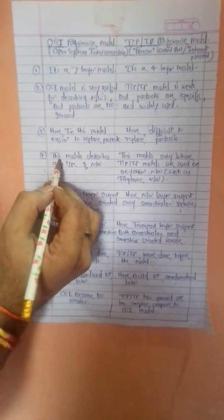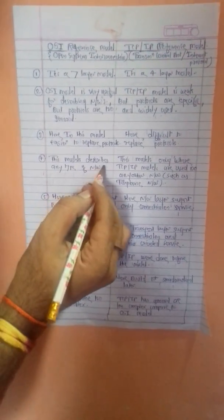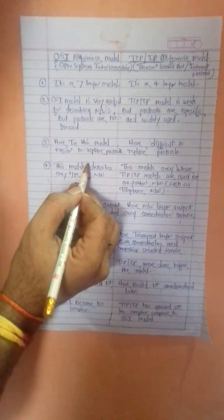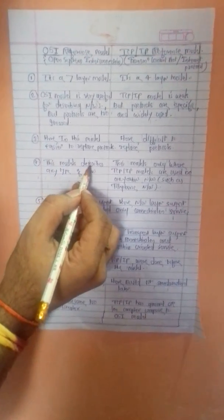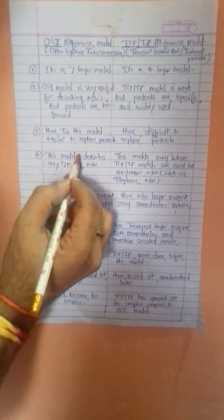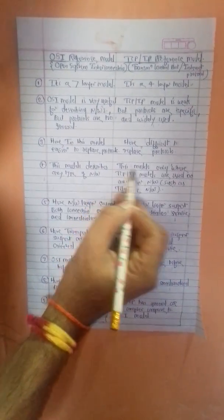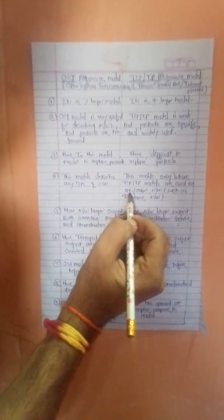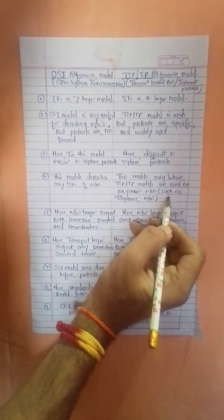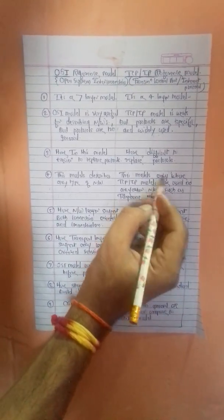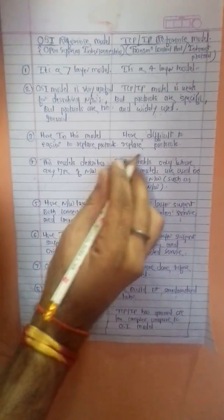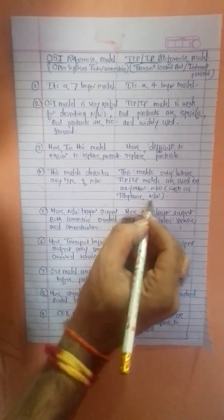Point four: the OSI model can describe any type of network. But the TCP/IP model only describes networks where TCP/IP is used — it does not cover other networks such as telephone networks.